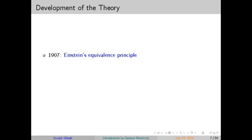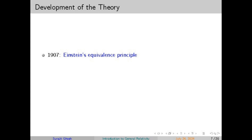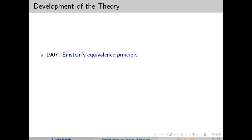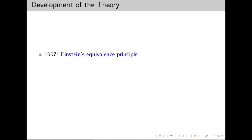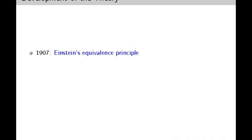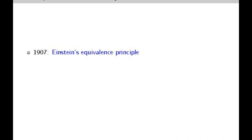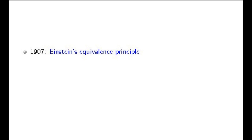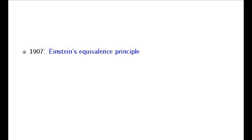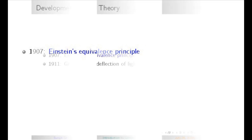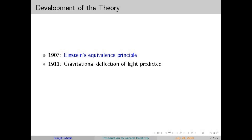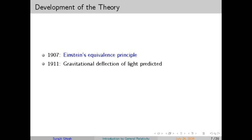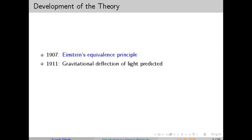One of the most practical applications of general relativity is the Global Positioning System, or GPS. The GPS satellites orbiting Earth experience a weaker gravitational field compared to those on the Earth's surface, so their clocks run faster. To ensure GPS remains accurate, these relativistic effects must be taken into account — without the adjustments, GPS would be off by several kilometers. Beyond GPS, general relativity also impacts our understanding of the universe through gravitational lensing, where light from distant objects is bent around massive objects, confirming GR's predictions and providing insights into the distribution of dark matter.